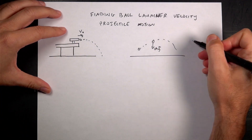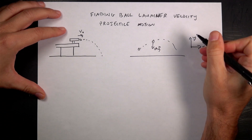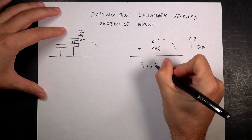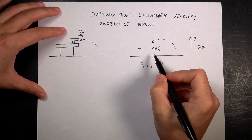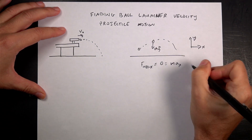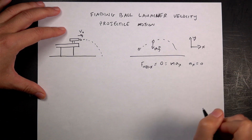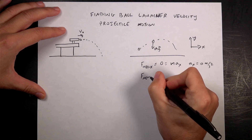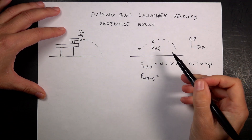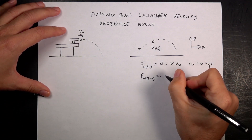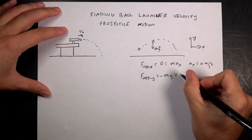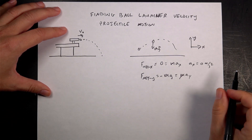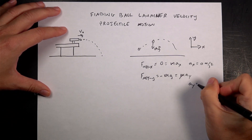With only that single force, calling this the x direction and this the y direction, F_net in the x direction is zero — there's no net force in the x direction, only in the y direction. So mass times acceleration in the x direction is zero, meaning x acceleration is zero meters per second squared. The y force, F_net y, is in the negative y direction, so it's the scalar negative mg, which equals mass times acceleration in the y direction. The masses cancel, and so the acceleration in the y direction is negative g.